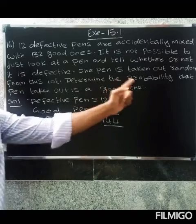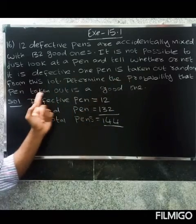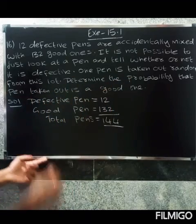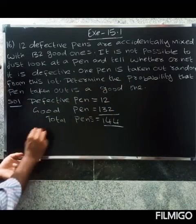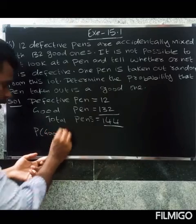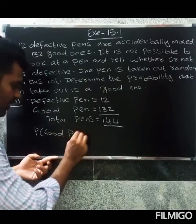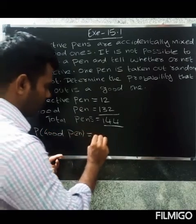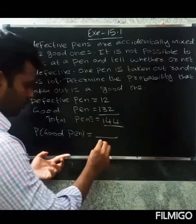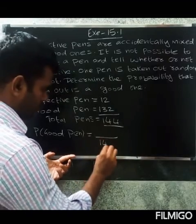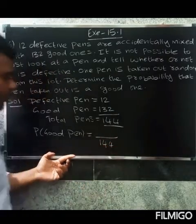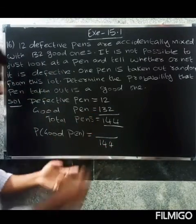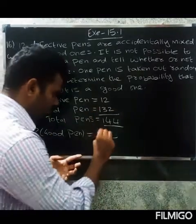Determine the probability that the pen taken out is a good one. The probability of a good pen equals the number of good pens divided by the total pens, which is 132 divided by 144.